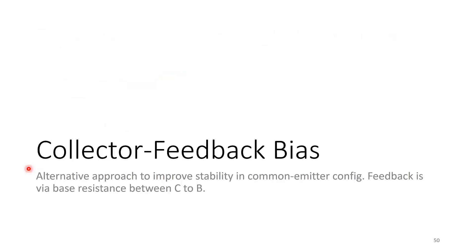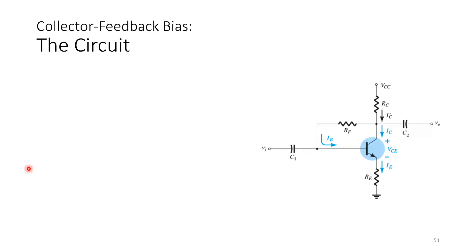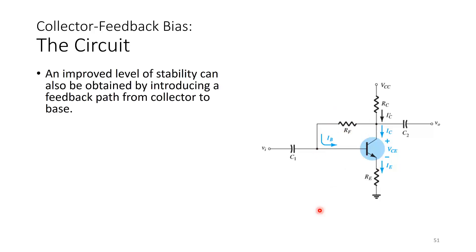For each circuit, we will analyse one sample circuit to give a feel of what is involved. Collector feedback bias is an alternative approach to improve stability in the common emitter configuration — an alternative compared to voltage divider biasing. Feedback is introduced via the base resistance between collector to base. This is how the circuit looks: the feedback introduced is from collector to base, and we call it RF.